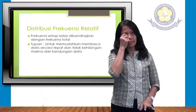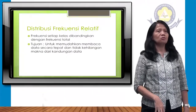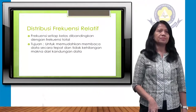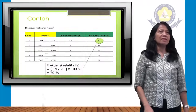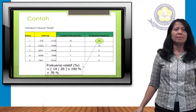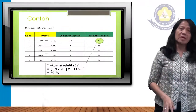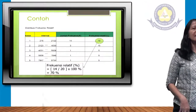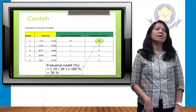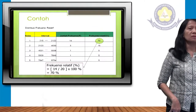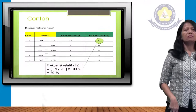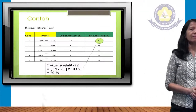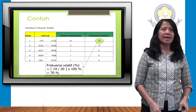Distribusi frekuensi relatif adalah frekuensi setiap kelas dibandingkan dengan frekuensi total. Tujuannya untuk memudahkan membaca data secara tepat tanpa kehilangan makna dari kandungan data. Contoh: interval 215 sampai 2.122, frekuensinya 14. Frekuensi relatifnya = 14/20 × 100% = 70%. Kelas kedua: 3/20 × 100% = 15%. Kelas ketiga: 1/20 × 100% = 5%. Jadi frekuensi relatif = frekuensi kelas ÷ total data × 100%.